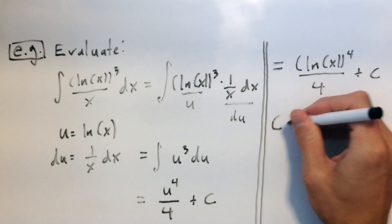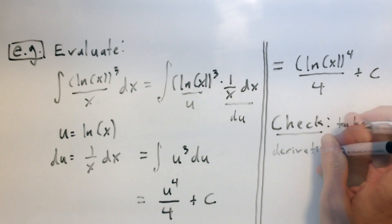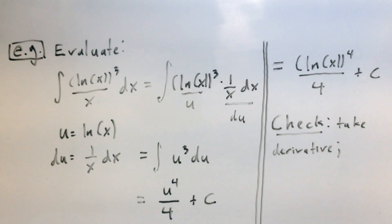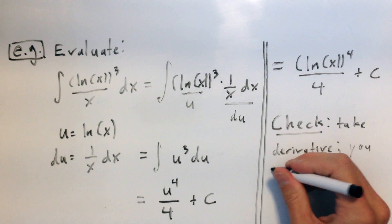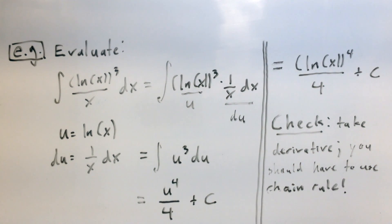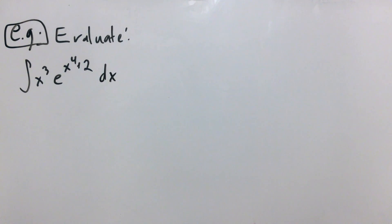I encourage you each time to check your answer by taking a derivative. Pretty much every time you do a substitution and then take the derivative — because substitution is the opposite of the chain rule — you should have to use the chain rule at some point. So go ahead, take the derivative of this, and see what you get. Let's try another example: evaluate the integral of x cubed times e to the x to the fourth plus two power dx.